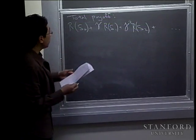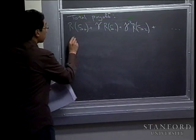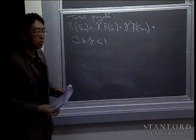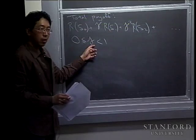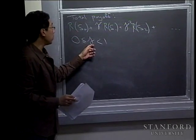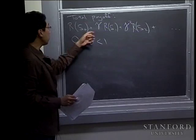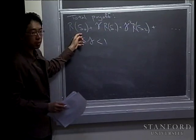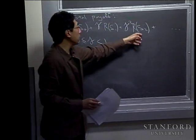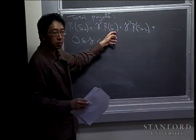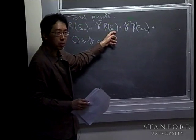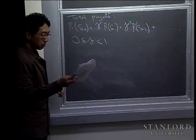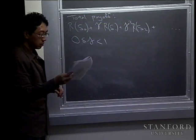The discount factor gamma is a number like 0.99. The effect of gamma is that the reward you obtain at time one is given a slightly smaller weight than the reward at time zero, the reward at time two is even a bit smaller, and so on. If this is an economic application where rewards are dollars earned or lost, the discount factor has a natural interpretation as the time value of money — a dollar today is worth slightly more than a dollar tomorrow because you can earn interest.